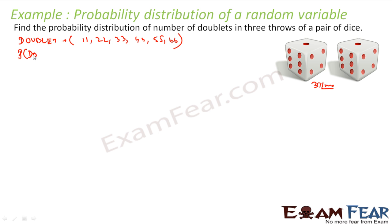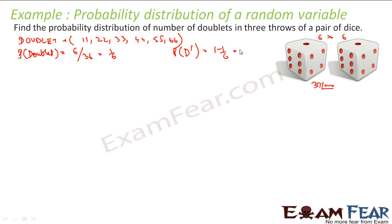In one throw, the probability of a doublet is 6 out of 36 total elements, which is 1/6. Similarly, the probability of not getting a doublet is 1 minus 1/6, which is 5/6. So I have the probability of doublet and the probability of not doublet.